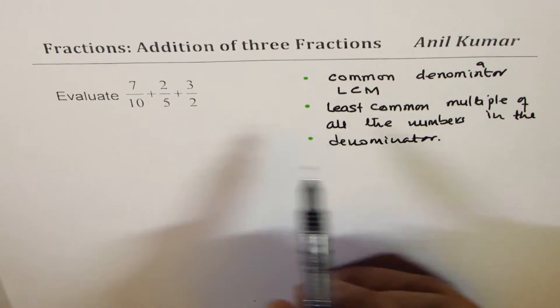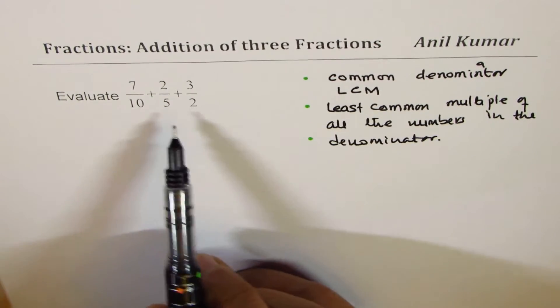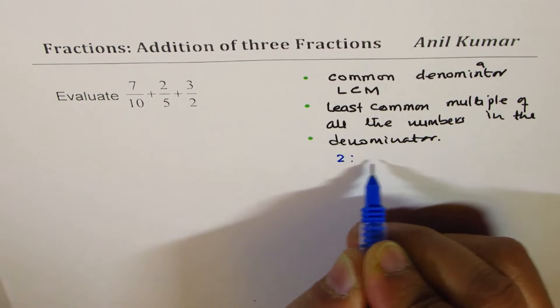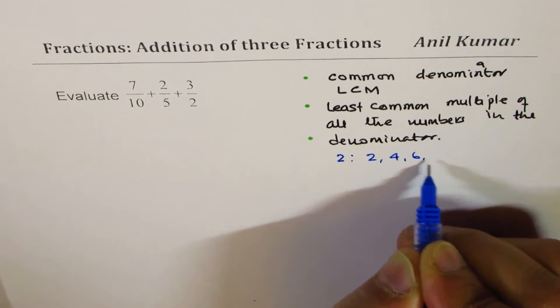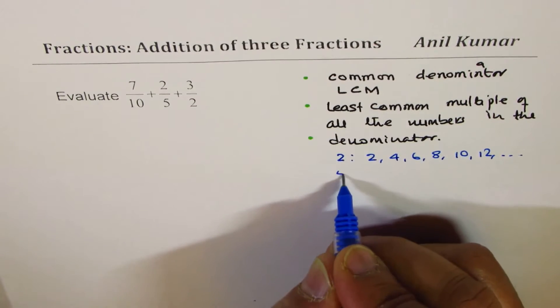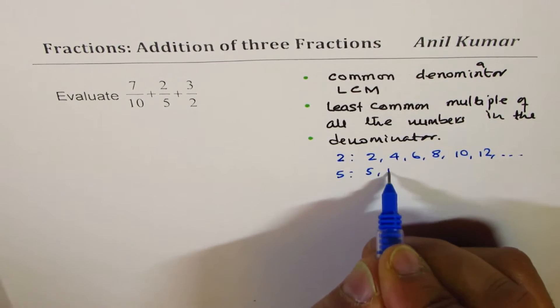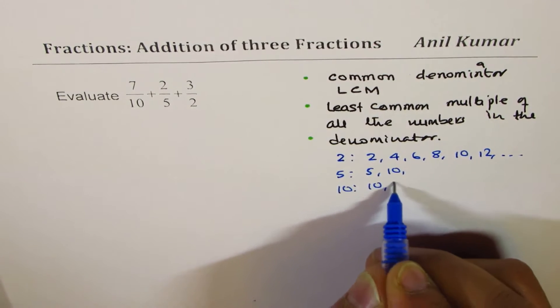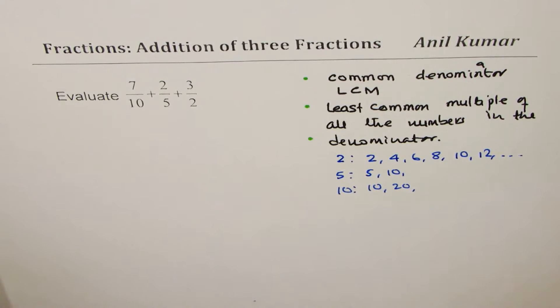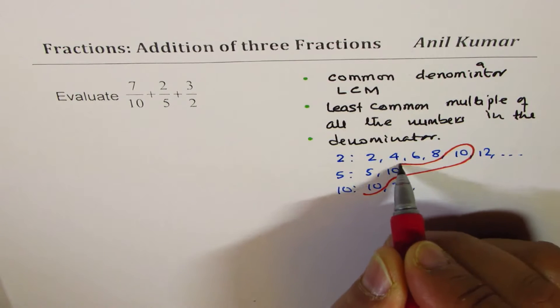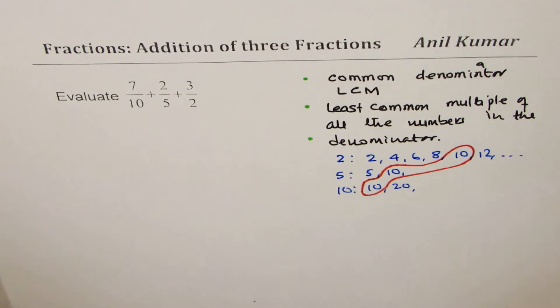There are different ways to get it. You could write multiples of 2, 5, and 10. For example, if I begin with 2, the multiples are 2, 4, 6, 8, 10, 12 and so on. The multiples of 5 are 5, 10, and we get 10 as common. And for 10, it's 10, 20 and so on. So what do you notice is that we have 10 as the common denominator.